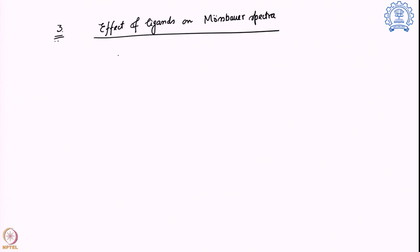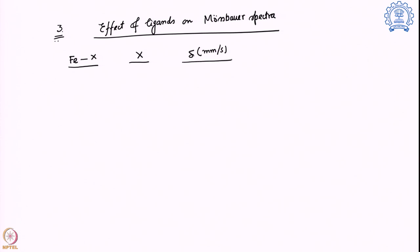Here we are going to use a particular iron complex connected to a ligand X, and we are going to change this X ligand and find out what the isomer shift is. Let us look at some examples.